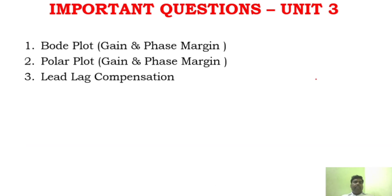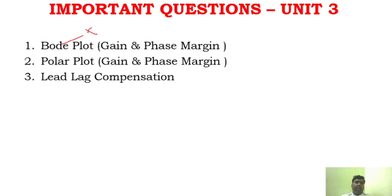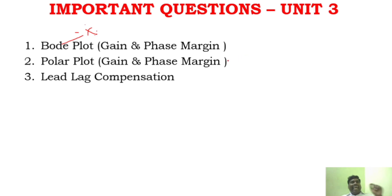Unit 3: Nyquist plot and Bode plot are very important. Polar plot is also important — it appears in Part B and Part C. Lead-lag compensation questions are very very important in Unit 3. Part C can be either polar plot, lead-lag compensation, or Bode plot.